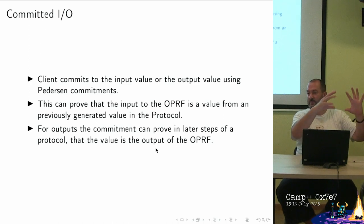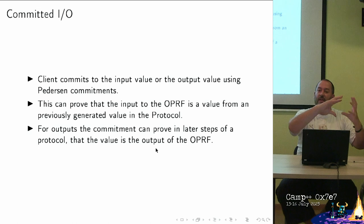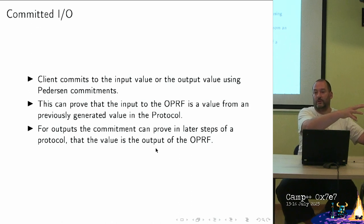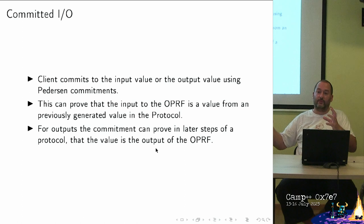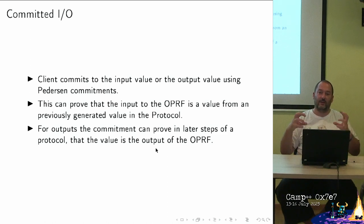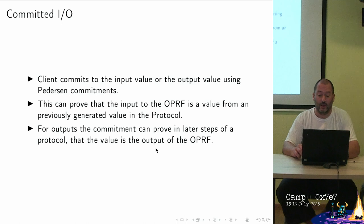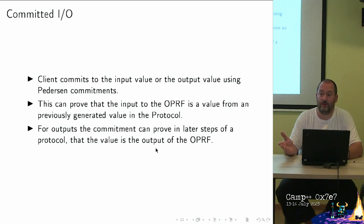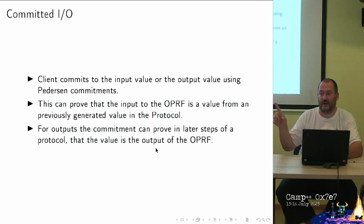Committed I/O is when you have a protocol with an OPRF inside, and you can commit to the input value and prove it's the result of previous protocol steps — committed input OPRF. With committed output, you can prove that a value used later in the protocol is actually the output of the OPRF, letting you chain and tie values across protocol steps. With modified Dodis-Yampolskiy this is quite efficient, but if you need other properties and fall back to zero-knowledge proofs, the messages get larger and more expensive.